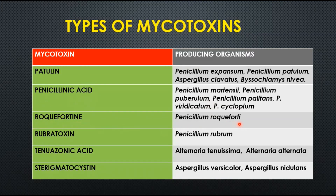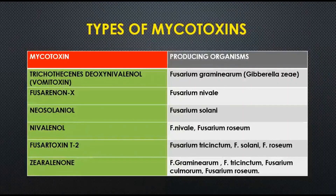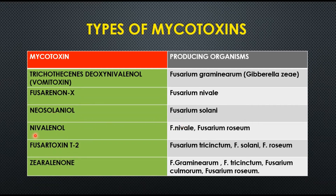Rugulosin is by Penicillium; rubratoxin by Penicillium rubrum; tenuazonic acid by Alternaria species; and sterigmatocystin by Aspergillus versicolor and Aspergillus nidulans. Further types include deoxynivalenol (vomitoxin) by Fusarium graminearum; fusarenone-X by Fusarium nivale; neosolaniol by Fusarium solani; nivalenol by Fusarium nivale and Fusarium roseum; T-2 toxin by Fusarium tricinctum, Fusarium solani, and Fusarium roseum; and zearalenone by Fusarium graminearum, tricinctum, culmorum, and roseum.